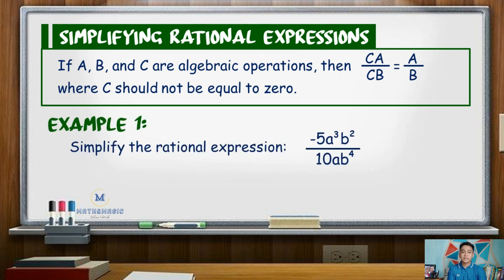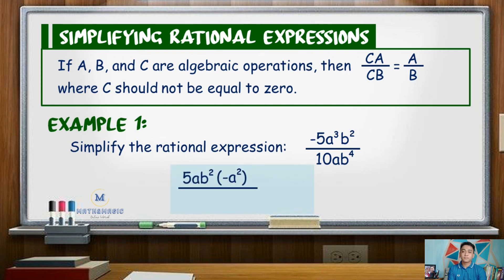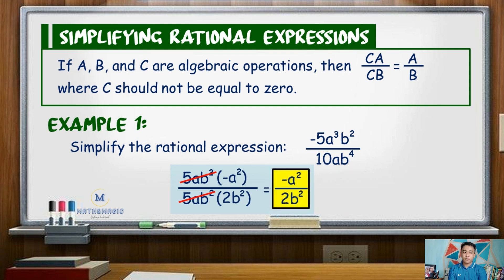For example number 1, simplify the rational expression negative 5A cubed B squared over 10AB raised to 4. We first factor both the numerator and denominator. The GCF is 5AB squared. So the numerator becomes 5AB squared times negative A squared, and the denominator becomes 5AB squared times 2B squared. Canceling common factors, the simplified form is negative A squared over 2B squared.